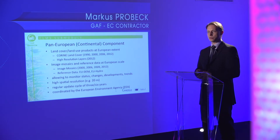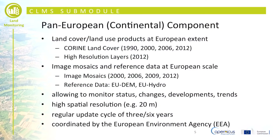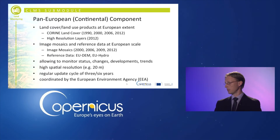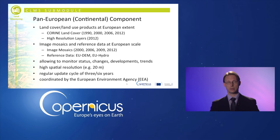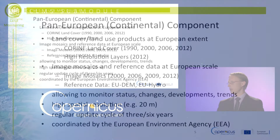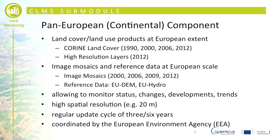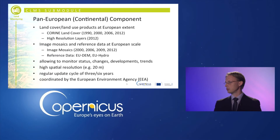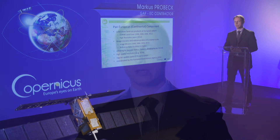The pan-European, or continental, component covers the EU 28 member states plus cooperating countries of the European Environment Agency — most of Western, Central, and Eastern Europe, plus Turkey. This component includes a range of products starting with CORINE Land Cover, which has the longest time series since 1990. It is a product with a 25-hectare minimum mapping unit that provides uniform coverage across all of Europe with 44 land cover and land use classes.